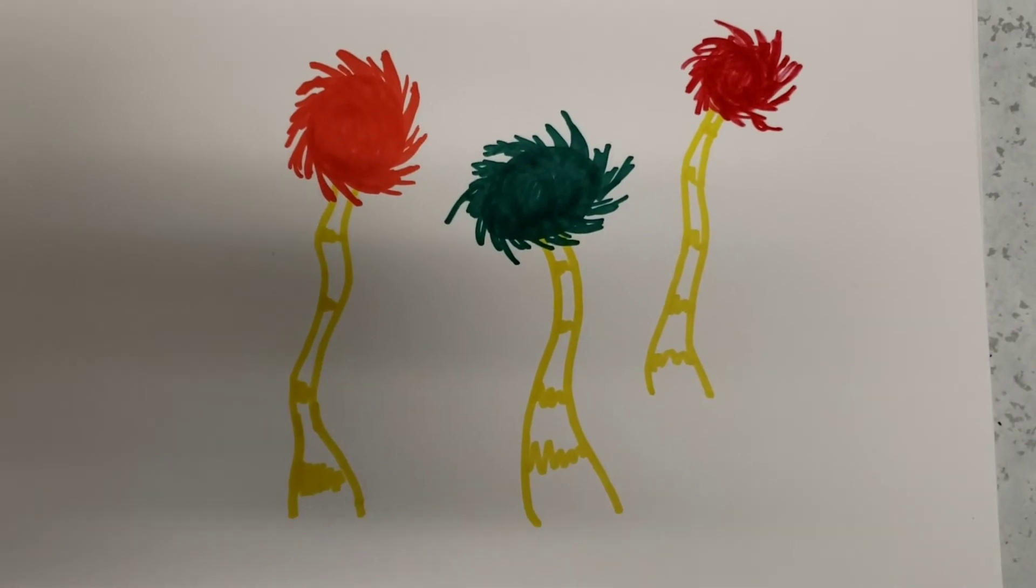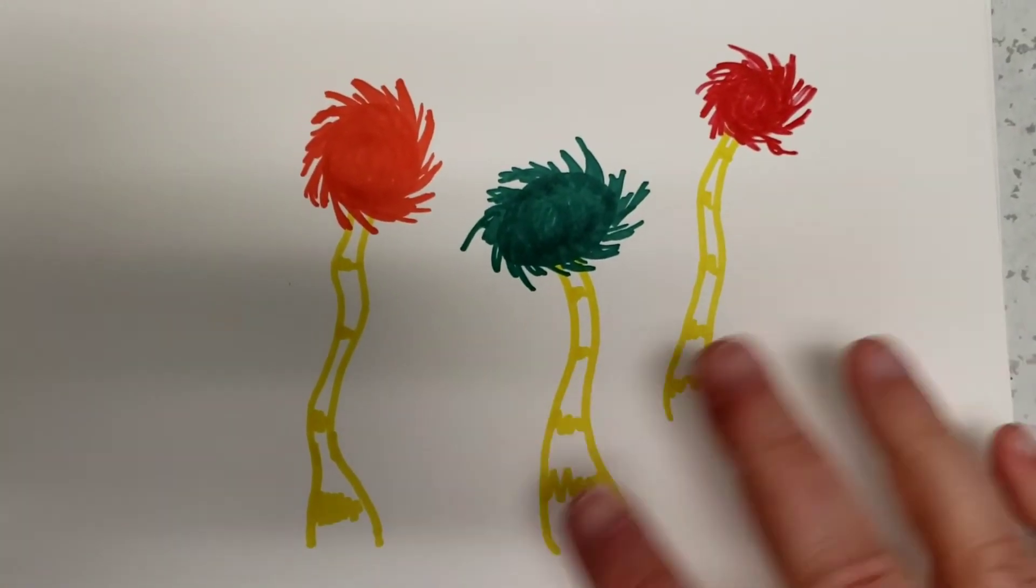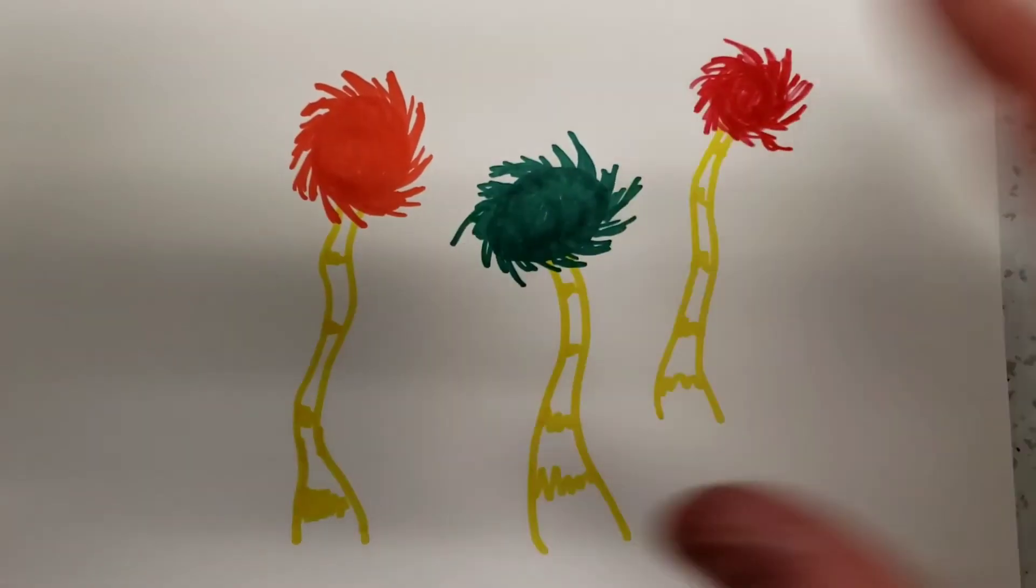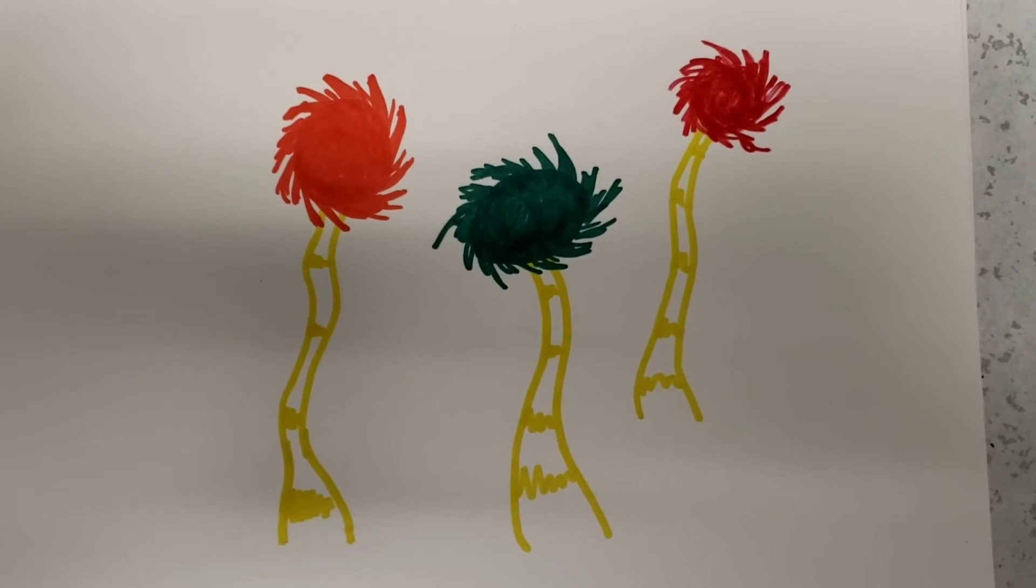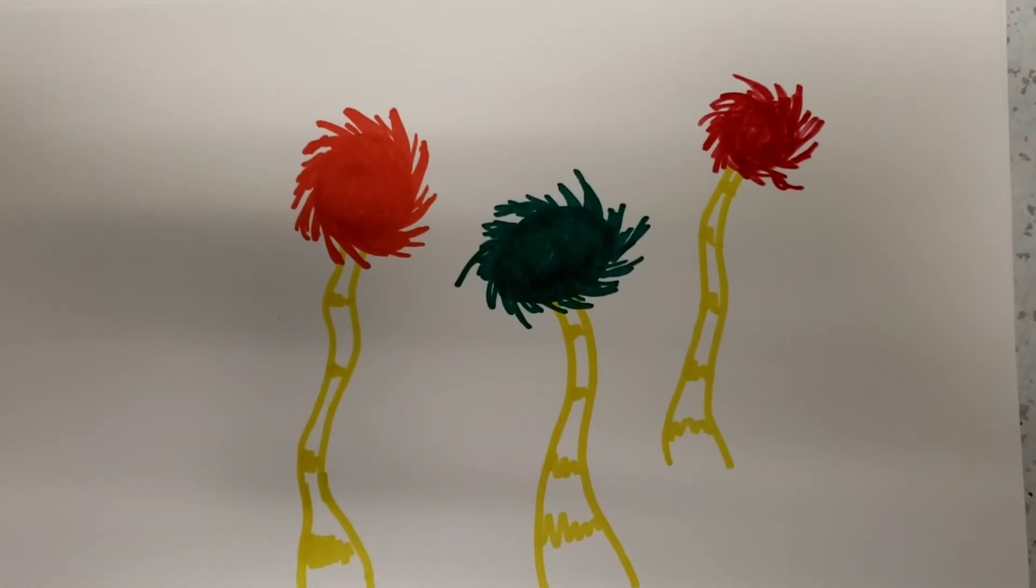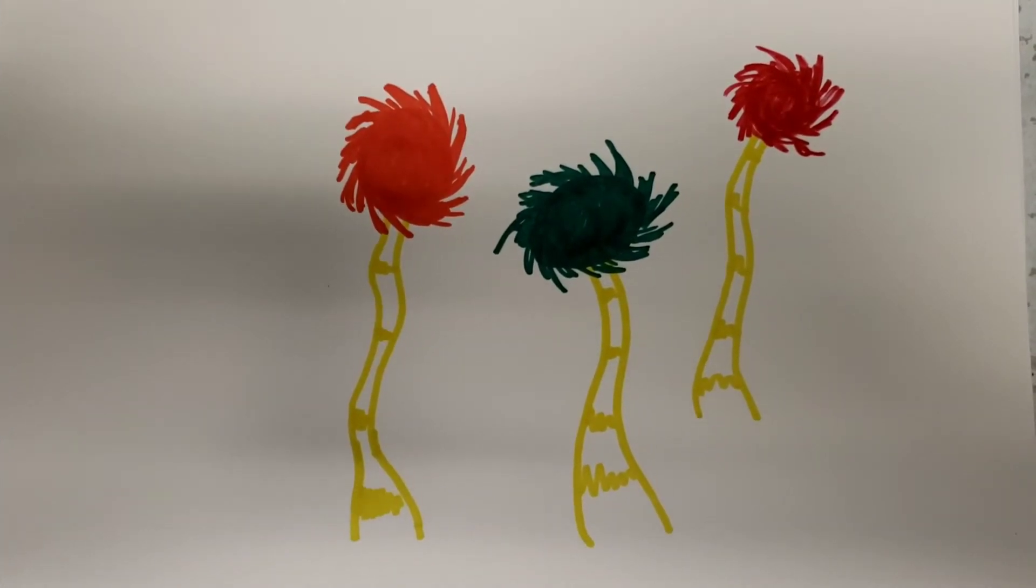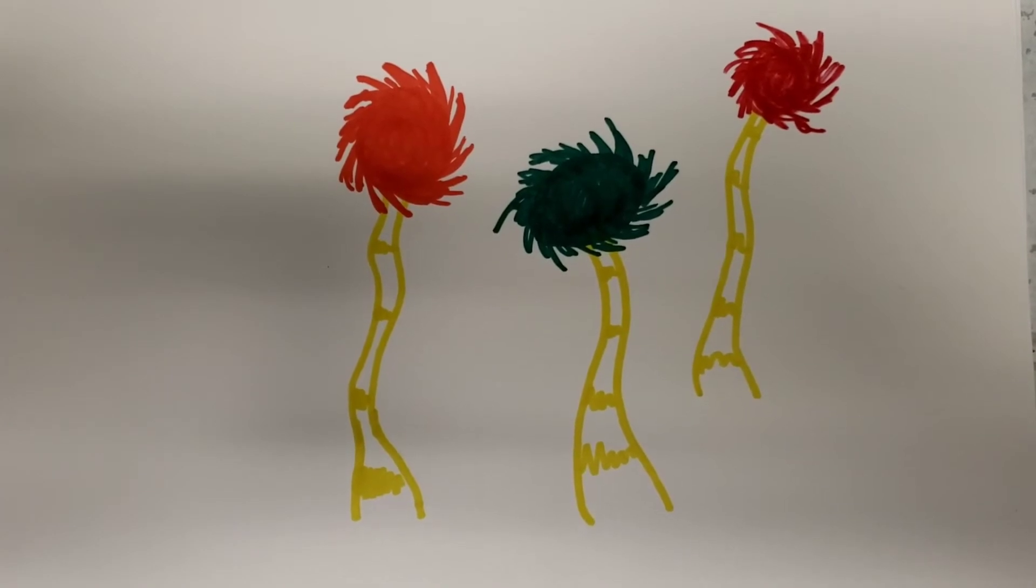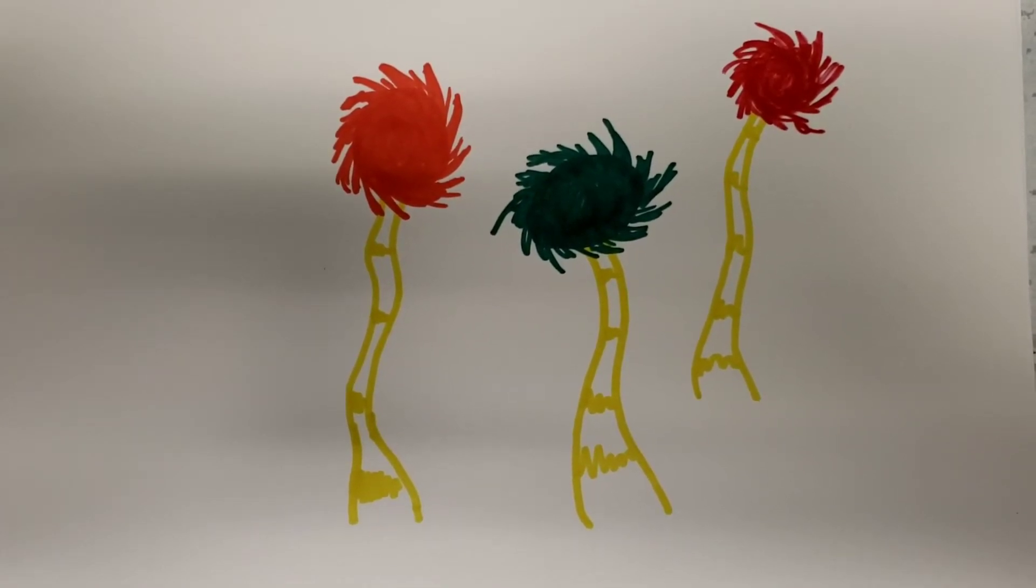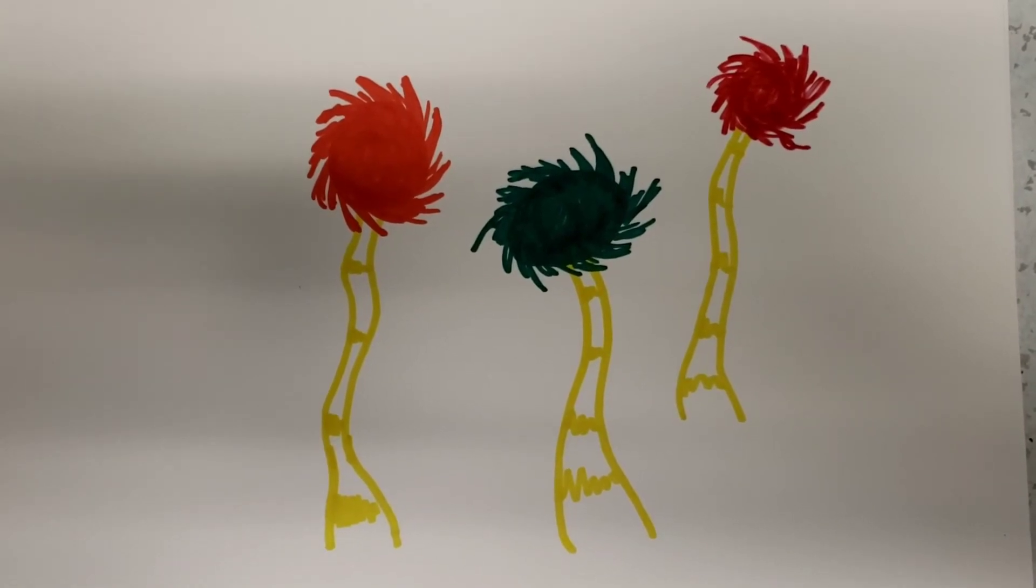Again, you can put these everywhere and have a whole forest. You can draw grass and add grass if you want to, or add a sky, whatever you want. There you go, three Truffula trees. Hope you enjoyed it, hope you had fun, hope you learned something. Like I said, you can fill up a whole page with these really quick once you get started and you can mix and match all kinds of colors for the tops. All right, take care, bye bye.